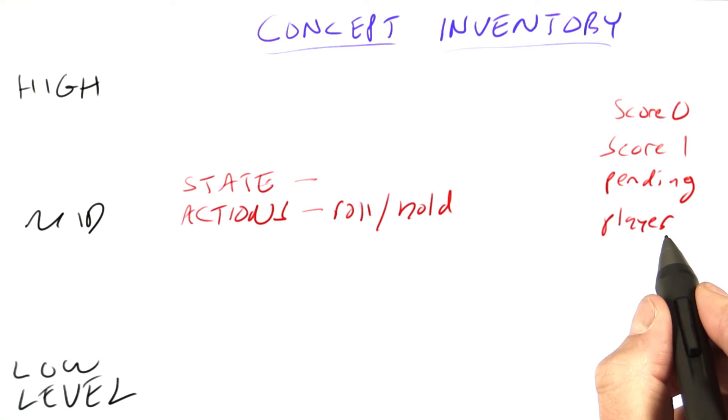Then, the player whose turn it is, we might want that to be part of the state. The previous roll of the dice, whether I just rolled a 5 or something else, that might be part of the state.